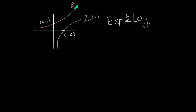Let's review the graphs of e to the x and ln of x. These are inverses of each other, and there's a graphical feature for inverse functions: if you draw the y equals x line, e to the x and ln of x are mirror images of each other. You just have to remember the general features of the graph.